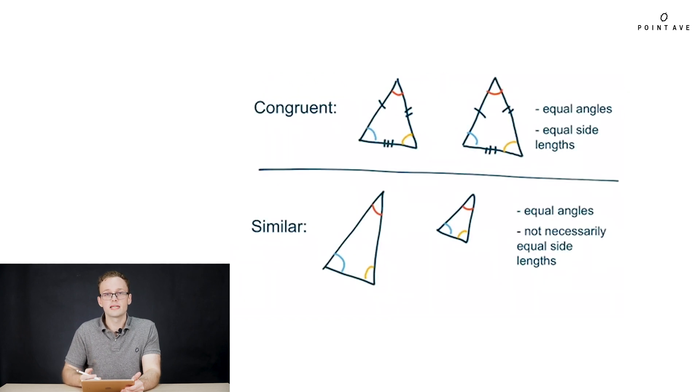And then how do we relate pairs of triangles? We can either say they are congruent or similar. Congruent means everything is the same. They have the same side lengths and the same angles. Similar means just the angles are the same, not necessarily side lengths also.